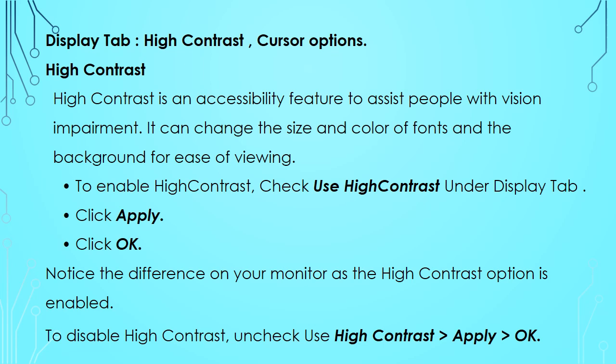The third tab of Accessibility Options is the Display tab. You can set two options from here: High Contrast and Cursor Options. High Contrast is an accessibility feature to assist people with vision impairment. It can change the size and color of fonts and the background for ease of viewing. To enable High Contrast, click the 'Use High Contrast' checkbox under the Display tab; this activates a dropdown list to choose the type of visual warning desired. Then click Apply and OK. To disable, uncheck 'Use High Contrast' and click Apply and OK.